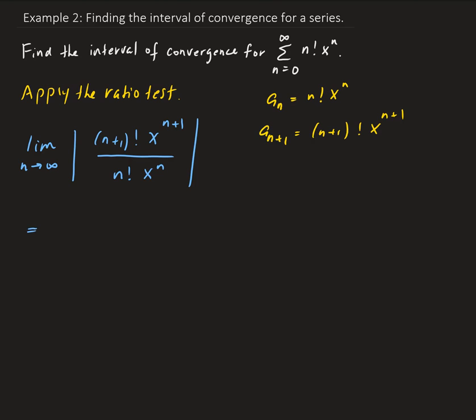So we're going to take the limit as n approaches infinity of (n+1) factorial times x to the n plus one, all over n factorial times x to the n. This gives us (n+1) factorial over n factorial, which leaves us with (n+1). And then x to the n plus one divided by x to the n is the same as x to the n times x over x to the n, so that leaves us with x, because those cancel out.